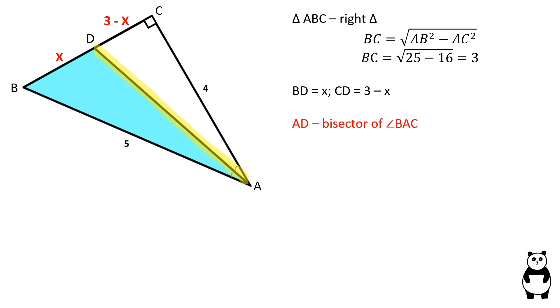AD is the bisector of angle BAC. We can use the angle bisector theorem to solve for X. The angle bisector of a triangle divides the opposite side into two segments that are proportional to the other two sides of the triangle.